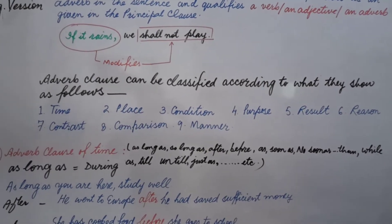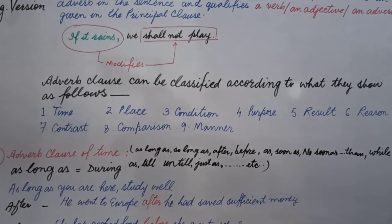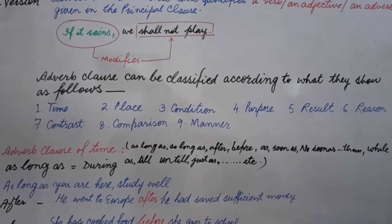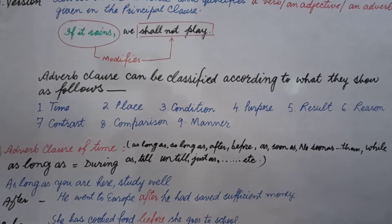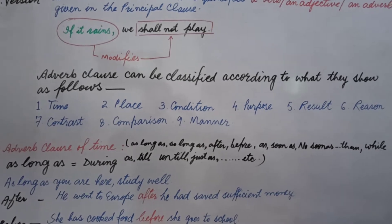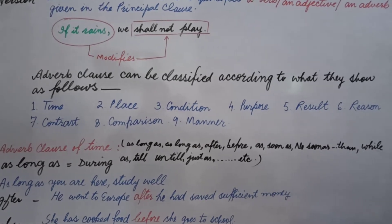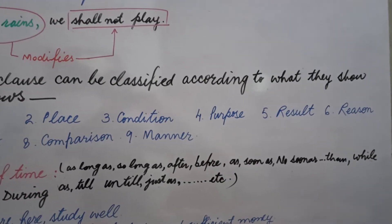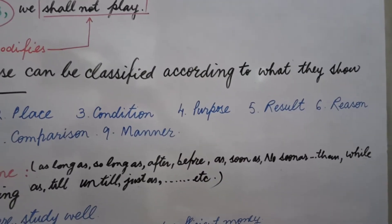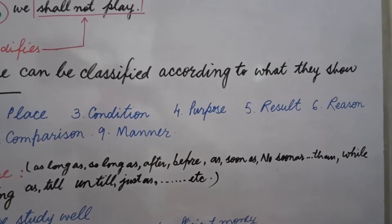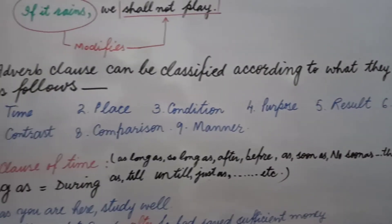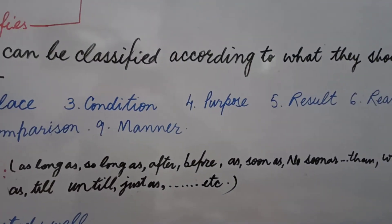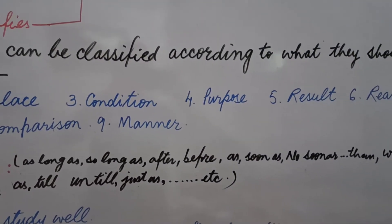Let's begin with point number one: adverb clause of time. The conjunctions used in adverb clauses of time are: as long as, so long as, after, before, as soon as, no sooner than, while, as, till, until, just as, etc.